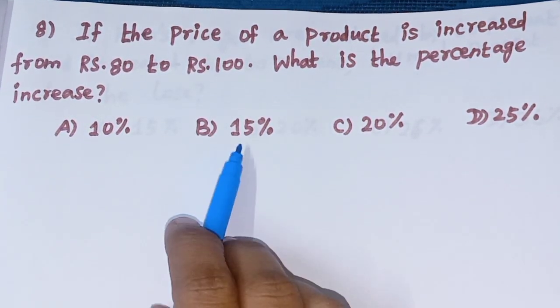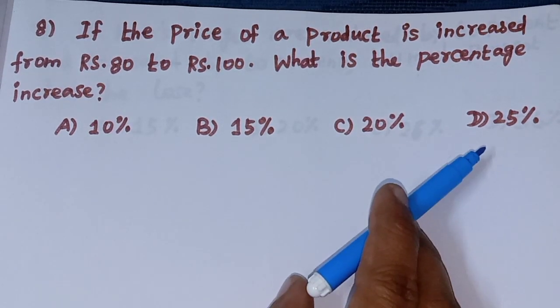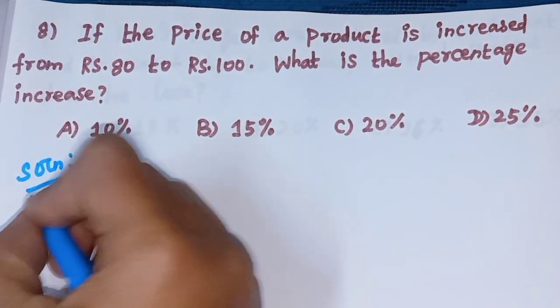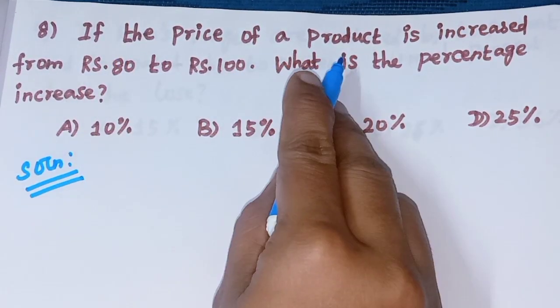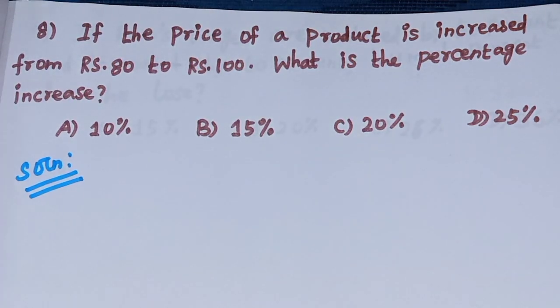Option A 10%, option B 15%, option C 20%, and option D 25%. Solution: the price of the product is increased from Rs. 80 to Rs. 100, so we need to find the percentage increase.